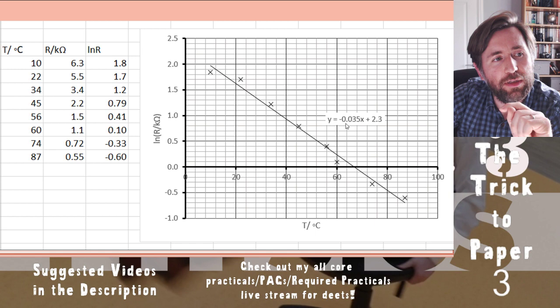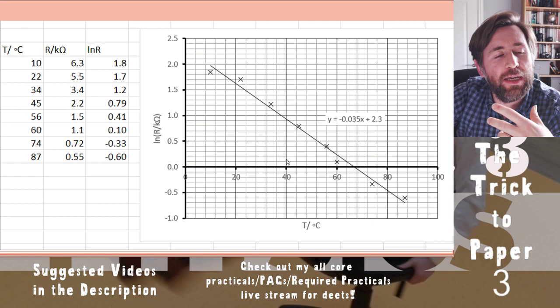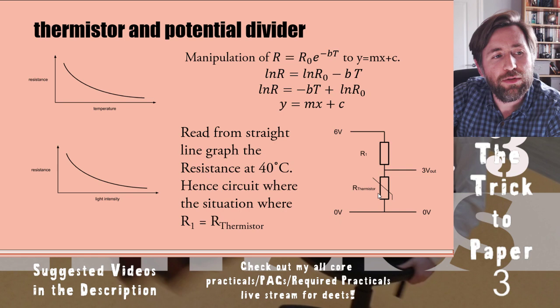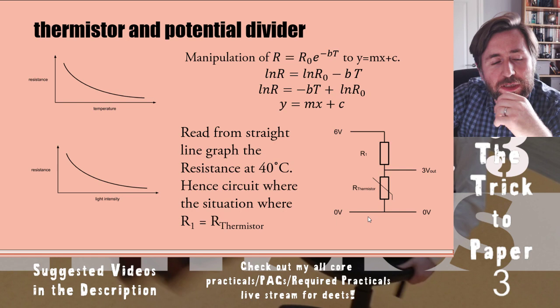Now I have a straight line, which is more accurate to read than an exponential curve — that's the reason for linearizing in this practical. I can interpolate up from 40°C to the line and across to a value of ln(R), then un-log it by computing e raised to that value, giving me a resistance in kilohms. At 40°C the thermistor will have that resistance, so I need a fixed resistor of equal resistance to give an output of half the input — that's 3 V.